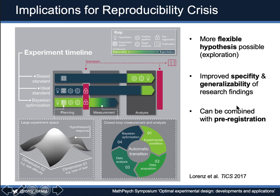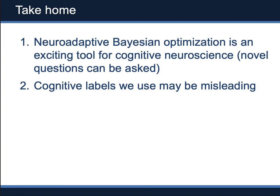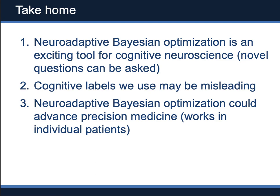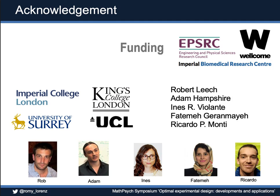My take-home message: neuroadaptive Bayesian optimization is an exciting tool for cognitive neuroscience — you can ask novel questions that you couldn't ask with standard methodology. The cognitive labels we use may be misleading and we should pursue a more neurobiologically derived cognitive taxonomy. The technique can advance precision medicine as it works in individual patients and has the potential to be used as a new biomarker discovery tool. Pre-register your neuroadaptive experiments — it's easy and intrinsically implemented in the technique. Many thanks to my previous PhD supervisor Robert Leach and all my amazing collaborators from many different universities.